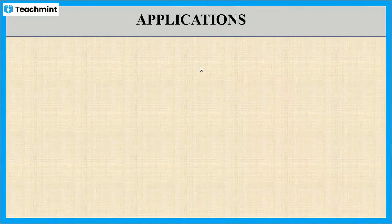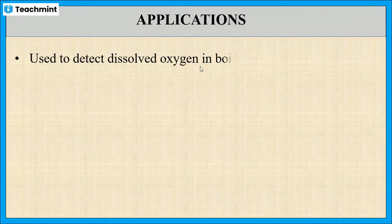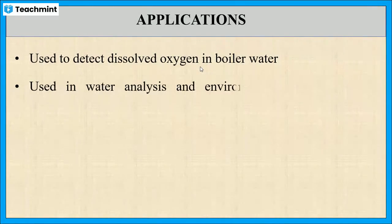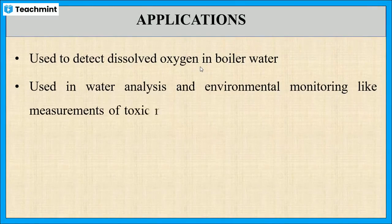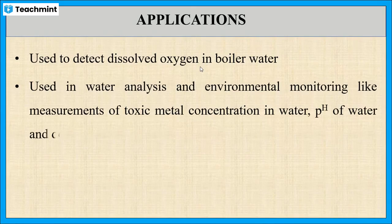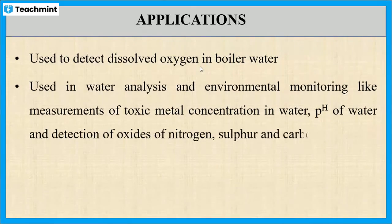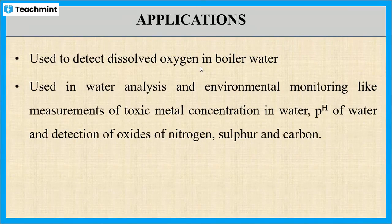Now let us see the applications. The electrochemical sensors are used to detect dissolved oxygen. It is also used in water analysis and environmental monitoring, like measurement of metal concentration in water, pH of water, and detection of nitrogen oxides, sulfur oxides, and carbon oxides.